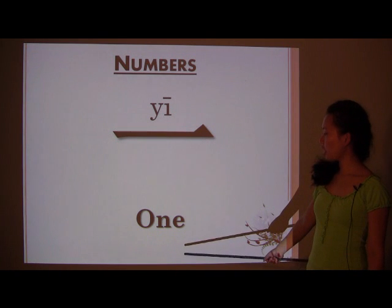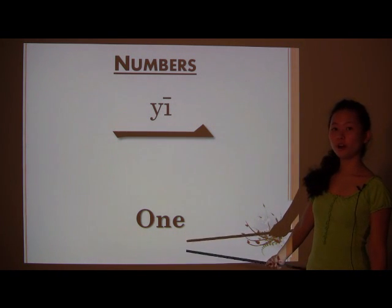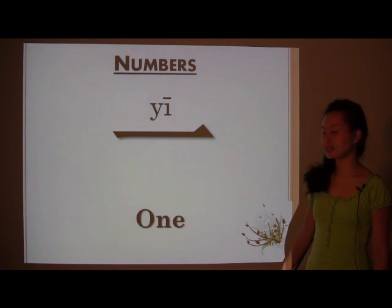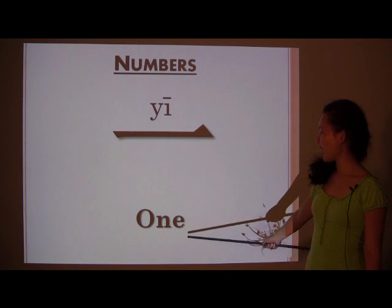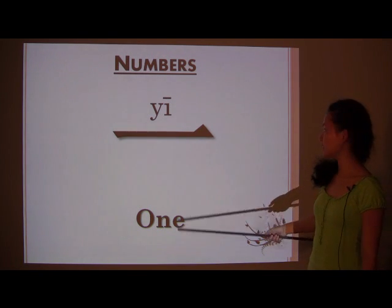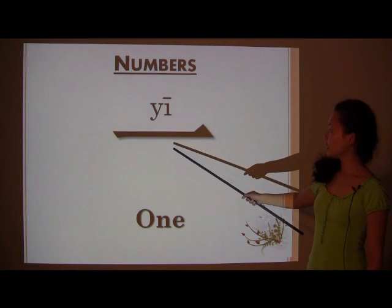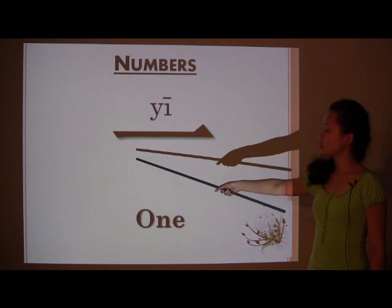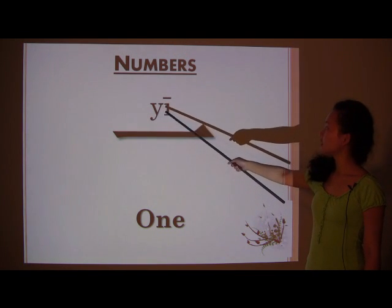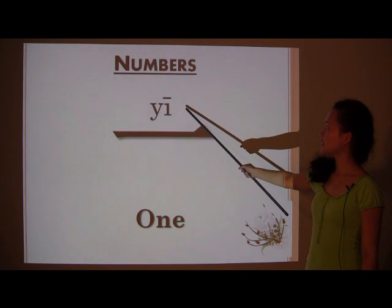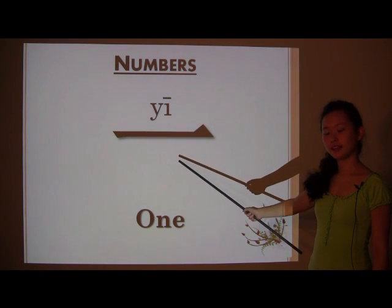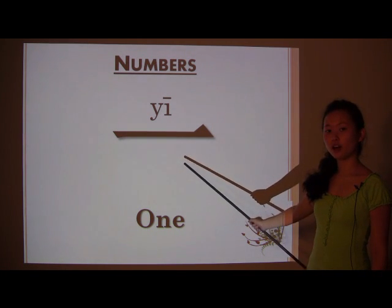Starting off — 1. When we count 1, 2, 3's, A, B, C's — this is how you say 1 in Chinese. 一 (YI), just one horizontal line, and the accent is 1 also. YI, long and drawn out.